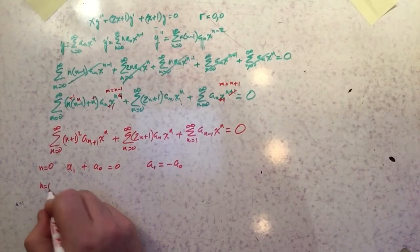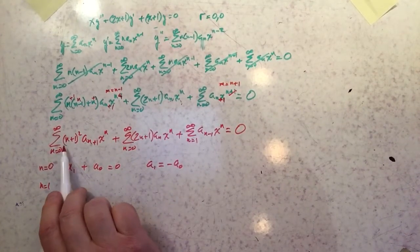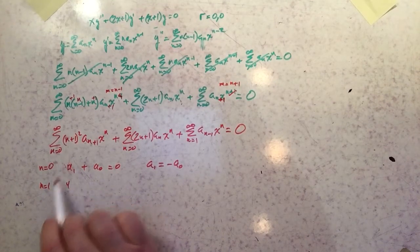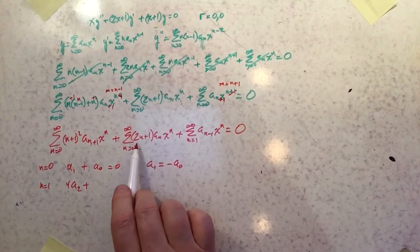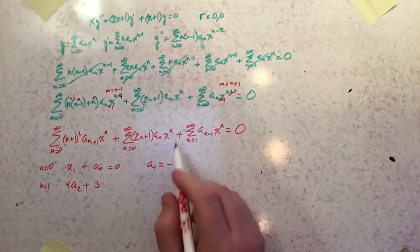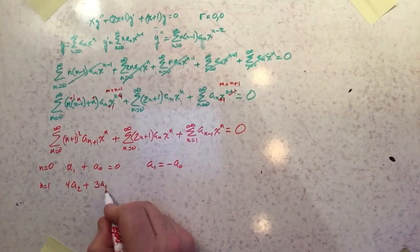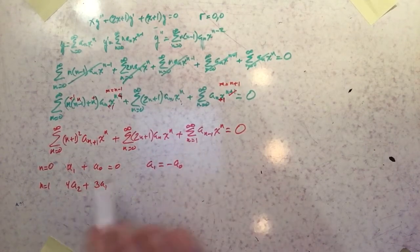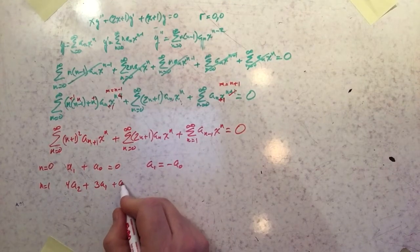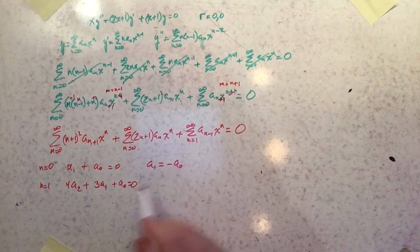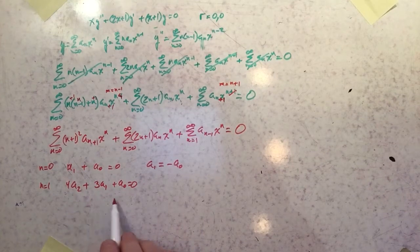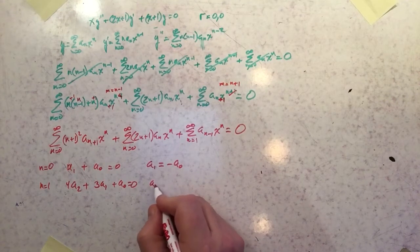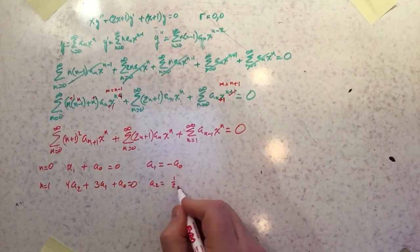At n = 1, all three series contribute: (2)²·a₂ + (3)·a₁ + a₀ = 0. Since a₁ = −a₀, this becomes 4a₂ − 3a₀ + a₀ = 0, so 4a₂ = 2a₀, giving a₂ = ½·a₀.